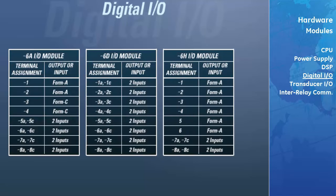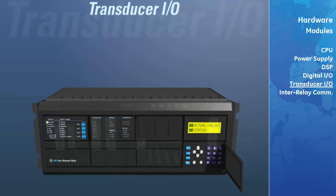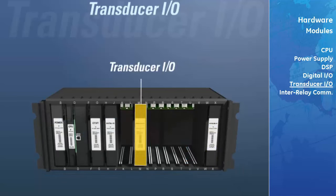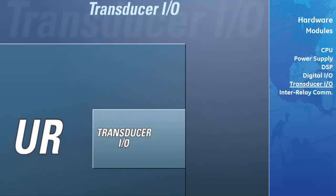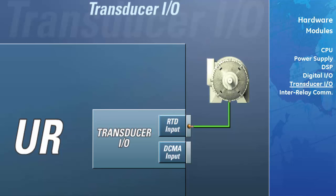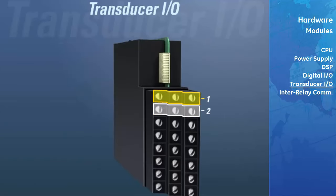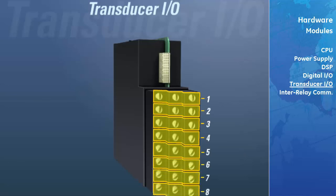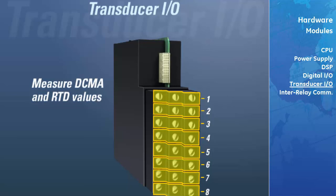The digital I/O module is offered in many configurations with different combinations of inputs and outputs; your application will determine which configuration to select. The transducer input-output modules are used to receive input signals from external analog devices. These analog input signals consist of two types: resistive temperature detectors (RTDs) and low current variable inputs called DCMA inputs. RTDs are used to measure the temperature of devices such as motors or generators. DCMA inputs are low current inputs sent to the UR from devices such as PLCs and other relays. Each transducer I/O module has eight separate input channels for measuring DCMA and RTD values and is offered in several different configurations.